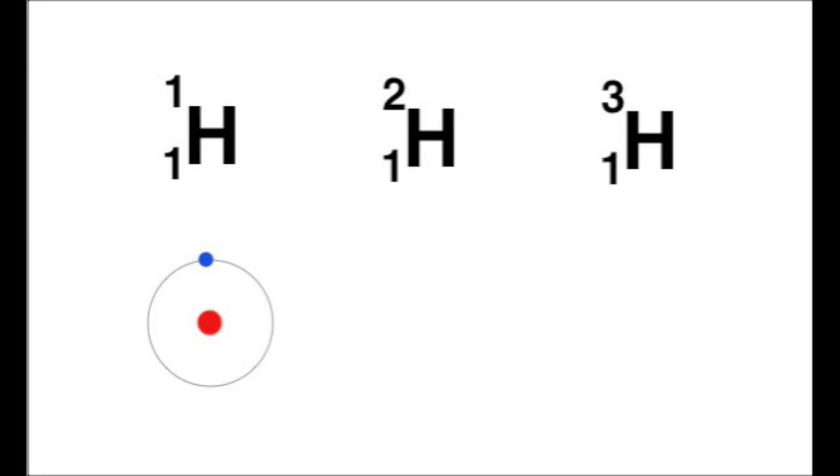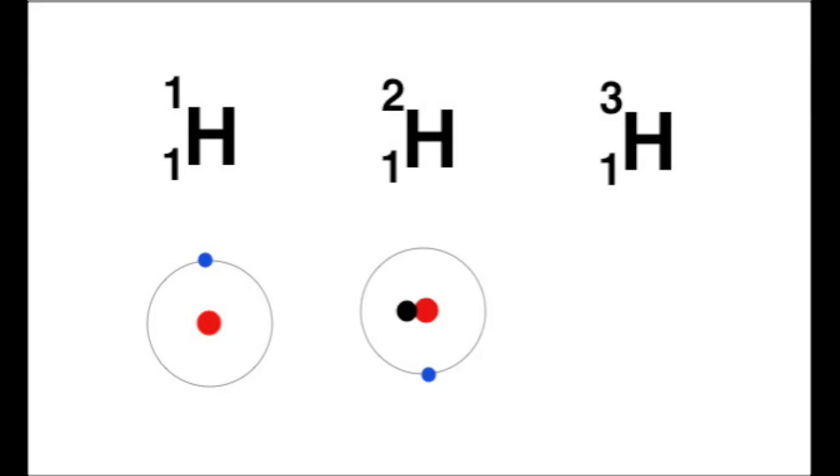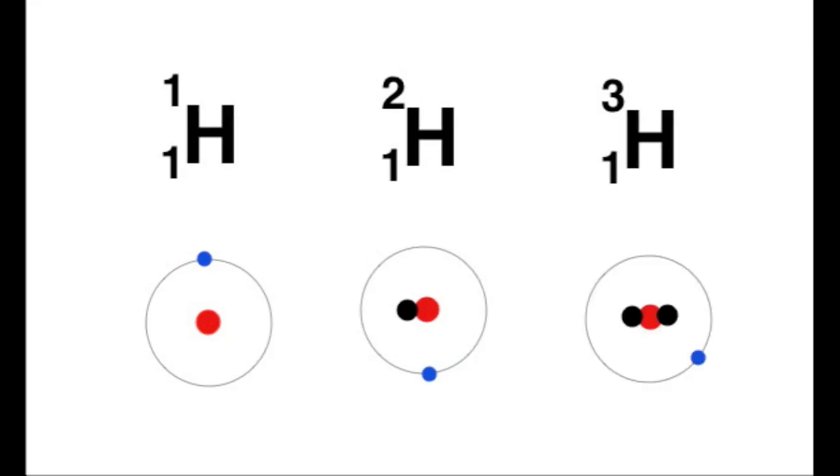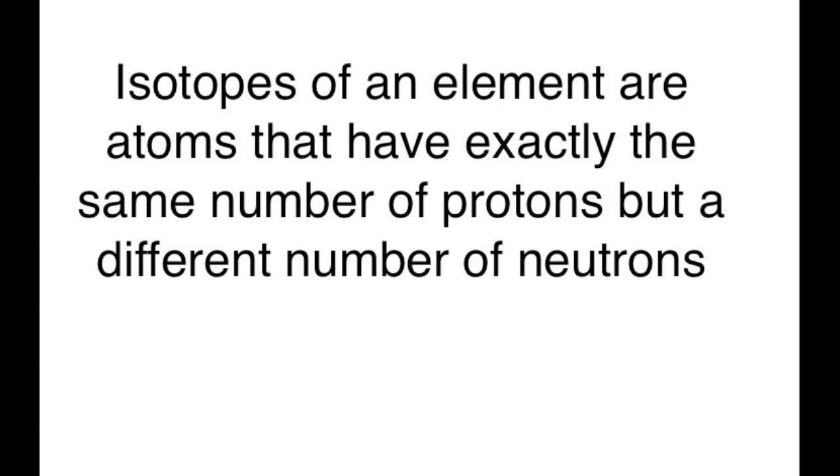For a last example, let's take the most common element in the universe, hydrogen. The most abundant isotope is hydrogen with one proton and one electron. There are however two other isotopes, one with an additional neutron and a third with two additional neutrons. Isotopes of an element therefore have exactly the same number of protons and exactly the same chemical properties, but they have a different number of neutrons.